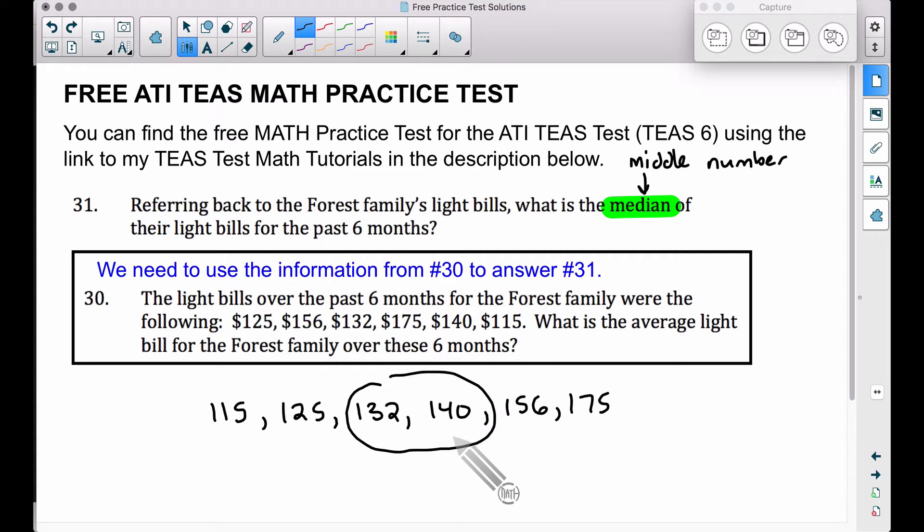The average of two numbers is the sum of those two numbers and we divide by two. Therefore, adding 132 and 140 we get 272, and now let's divide that by two. Of course we could use the calculator for this, but just for sake of reviewing long division.